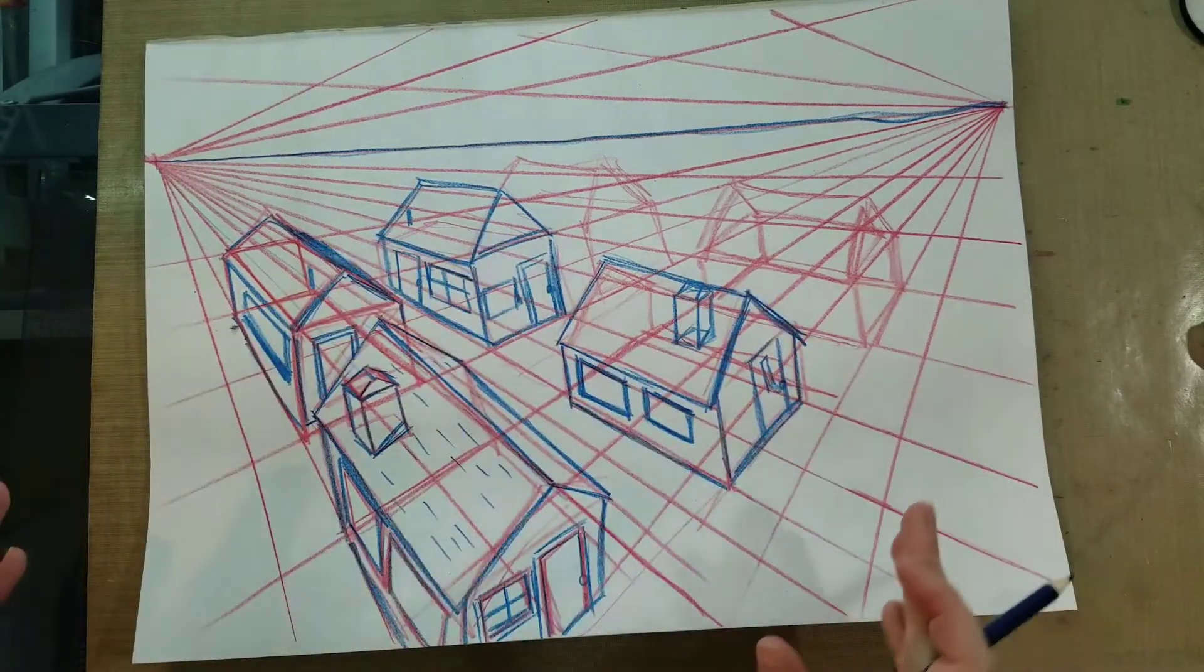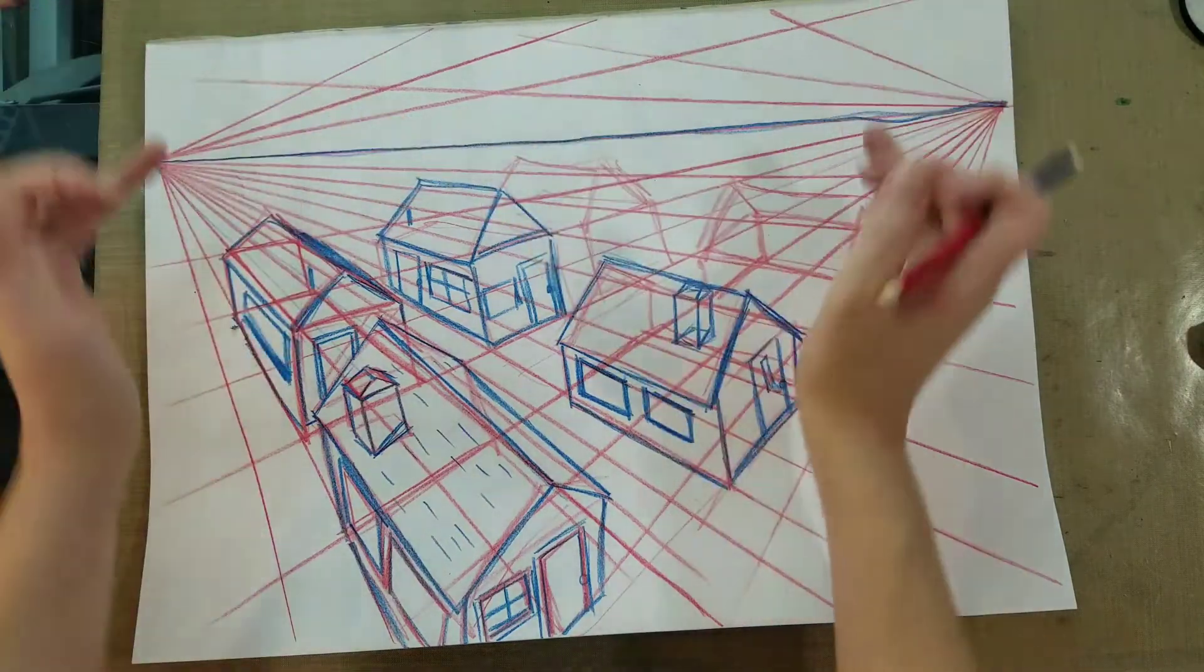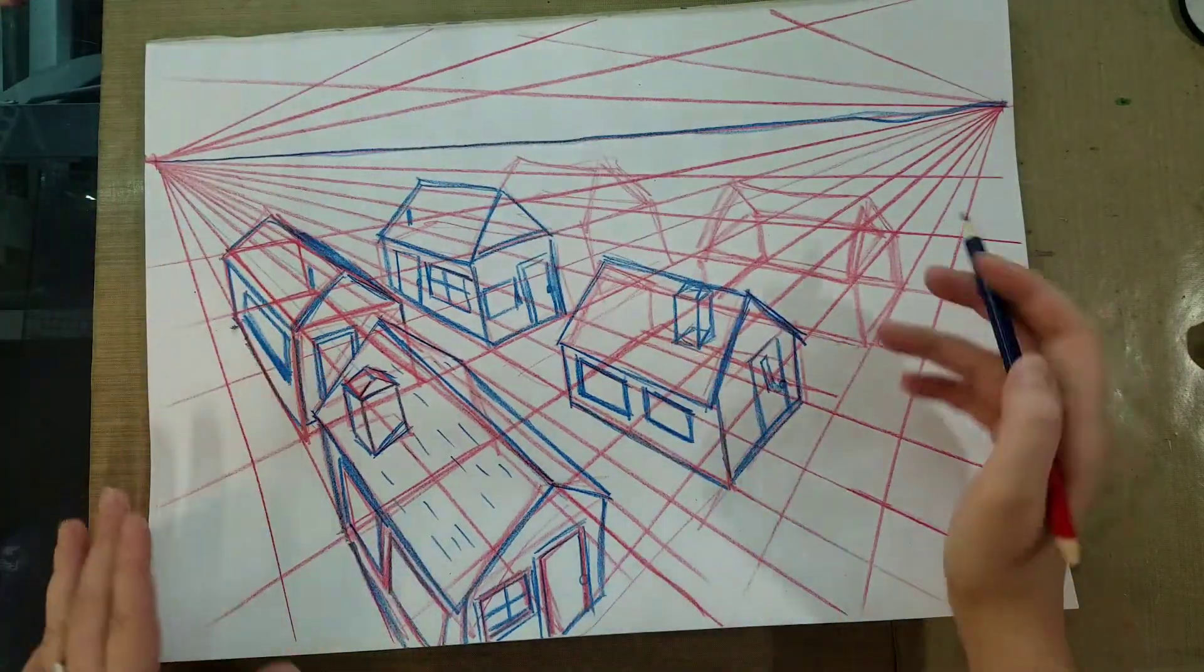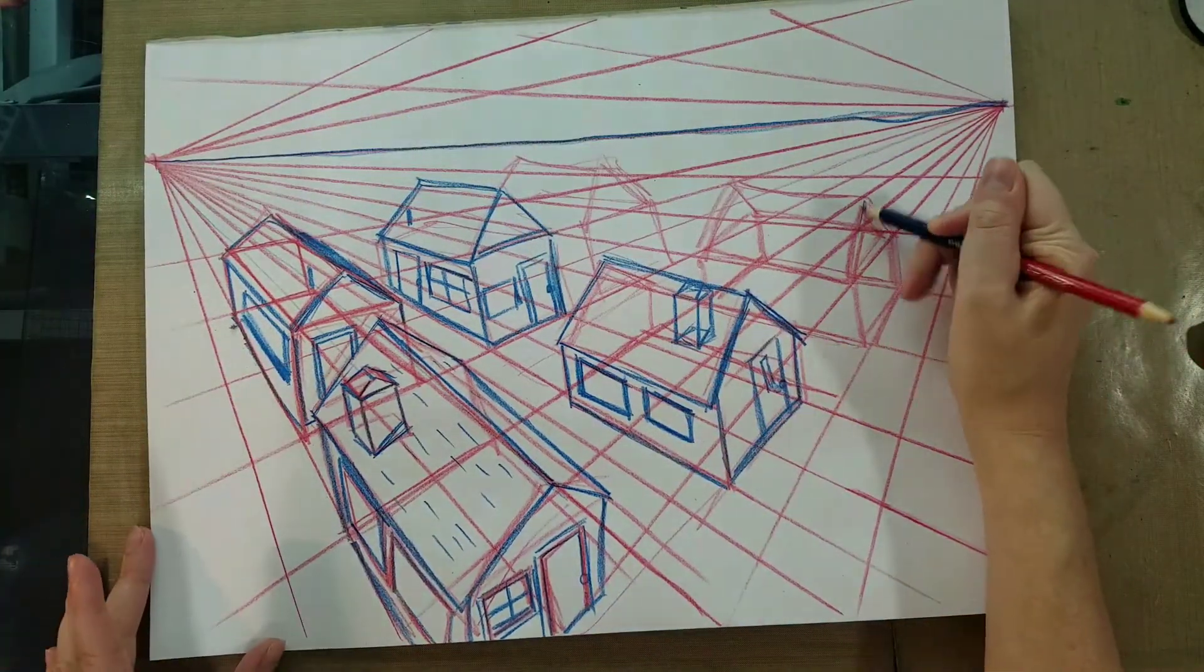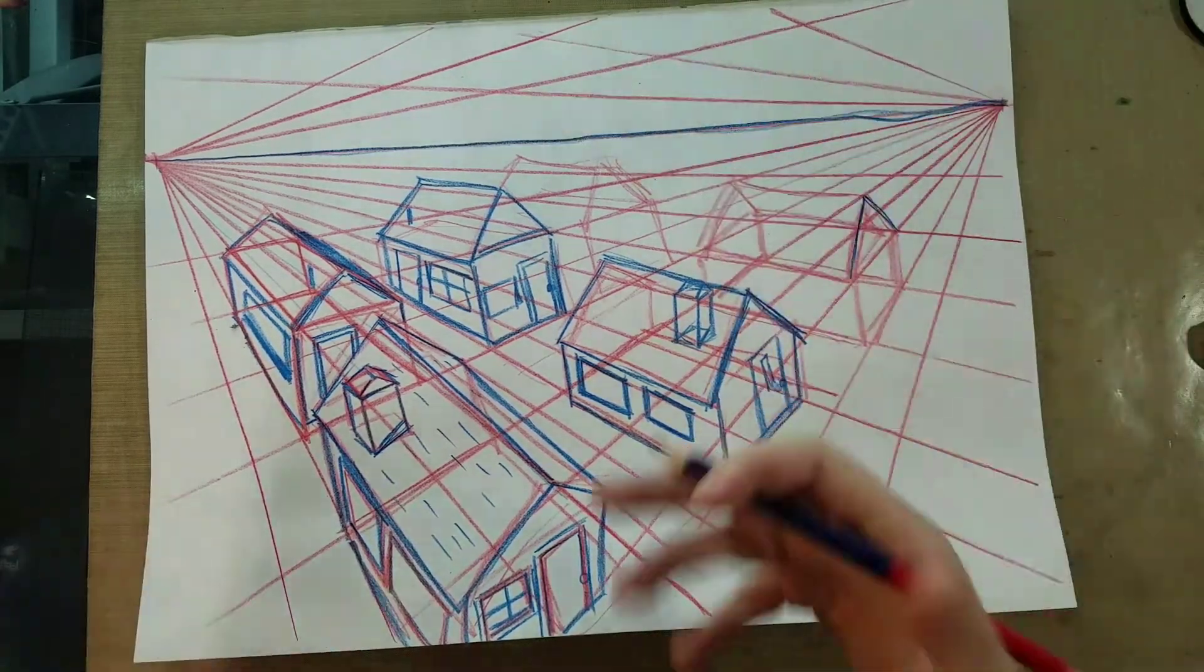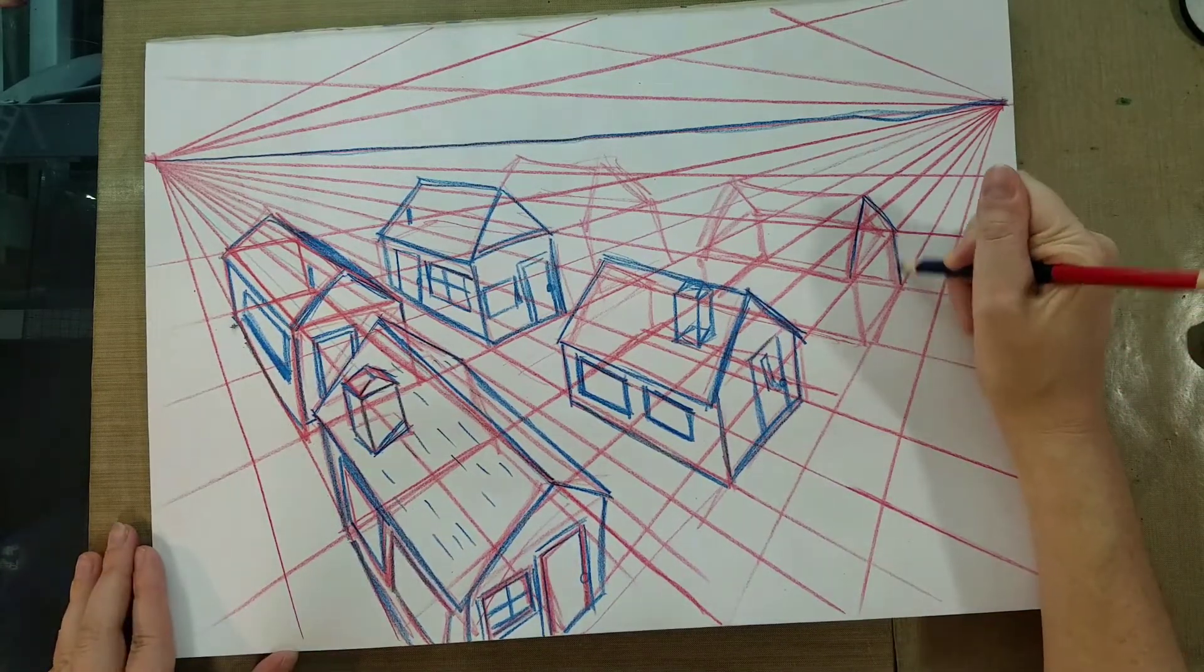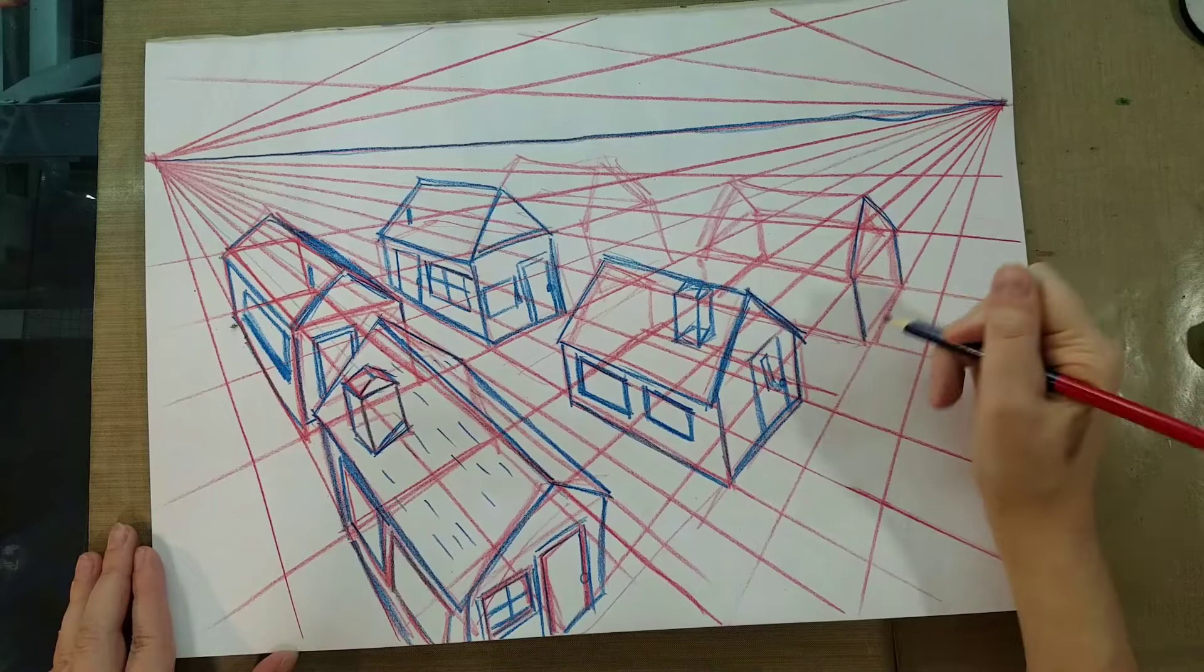Now you definitely want to fill this environment. You want more than just six houses otherwise you're going to want to crop your frame in because it's going to look kind of empty. Adding things like cars, adding things like other houses, adding things like trees and woods and hills, all of that makes it feel like a world that's fleshed out and lived in.